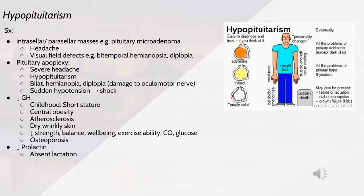Decreased growth hormone can be seen as short stature, central obesity, atherosclerosis, dry wrinkly skin, as well as decreased strength, balance and wellbeing, exercise capacity, cardiac output and glucose, as well as osteoporosis. A decrease in prolactin leads to absent lactation.